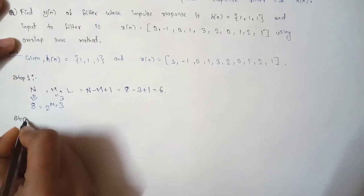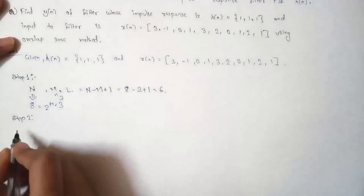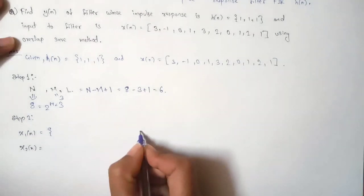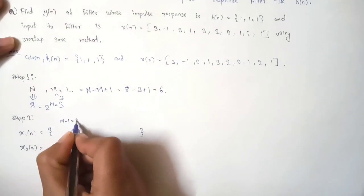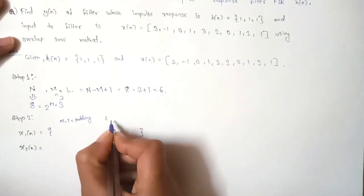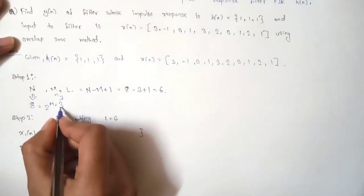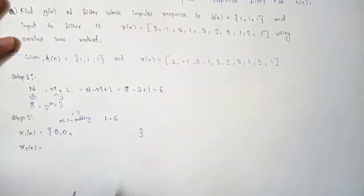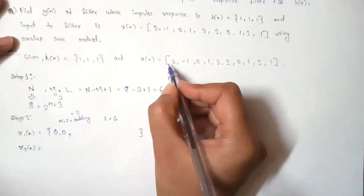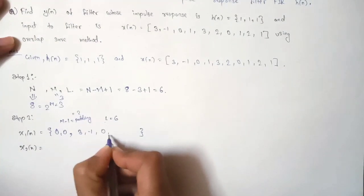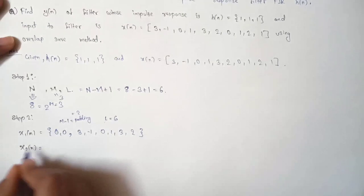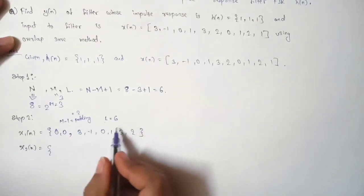Now let's move on to step 2. In this step we form two signals: x1(n) and x2(n). The first signal has M−1 padding — meaning we give zero values — and the remaining L = 6 digits come from the message signal. M−1 = 3−1 = 2, so the padding is {0, 0}. Then the 6 digits taken from the message signal are {3, −1, 0, 1, 3, 2}.